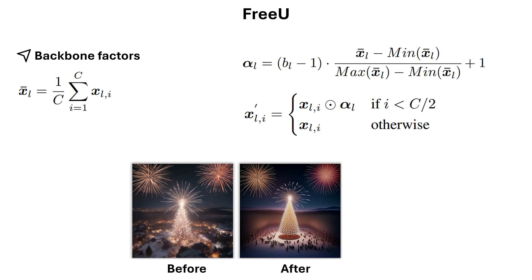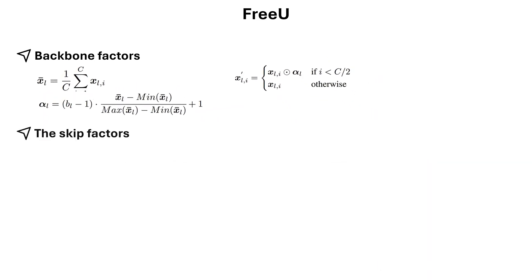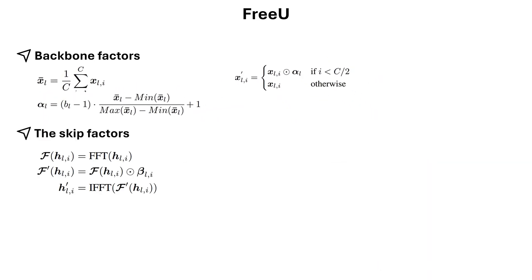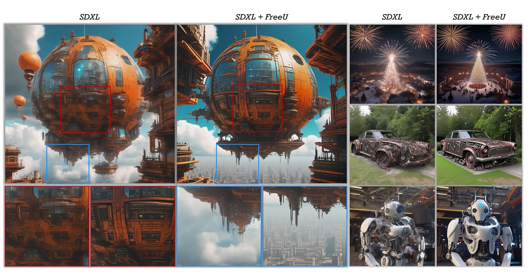However, applying this scaling leads to overly smooth textures, so they proposed applying the scaling only to the first half of the channels — leaving the remaining half to still contain high frequency information without being dampened. For the skip connection scaling, they apply FFT and IFFT, but use a threshold-based beta scale: if the frequency value r is less than a threshold, it attenuates those components by setting s_l to less than one; for all others it keeps the value as one. Adding this skip factor results in more low-level details being preserved, improving the overall generated image quality.